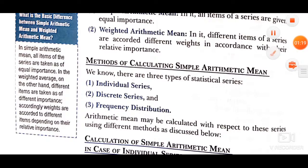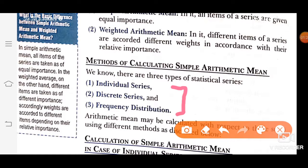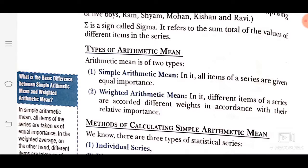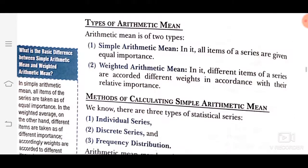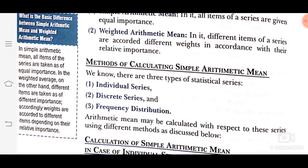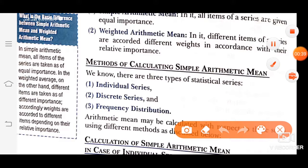To calculate arithmetic mean, we should have three types of series: first is individual series, second is discrete series, and third is frequency distribution. We are having two types of arithmetic means: first is simple arithmetic mean, and second is weighted arithmetic mean. In simple arithmetic mean, whatever the numbers are in a series, they are given equal importance. In weighted arithmetic mean, different items are accorded different weights in accordance with their relative importance. This time, we are going to do simple arithmetic mean, which has three types of series: individual, discrete, and frequency distribution.